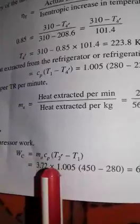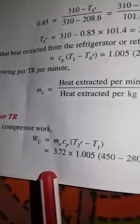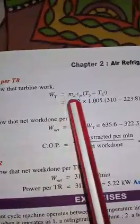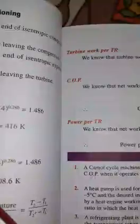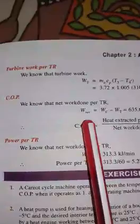Compressor work Wc = ma × Cp × (T2-dash − T1). From the PV and TS diagrams, compressor work goes from 1 to 2-dash and turbine work from 3 to 4-dash. Substituting ma = 3.73, Cp = 1.005, T2-dash = 450 K, T1 = 280 K, we get Wc = 635.6 kJ/min. Turbine work Wt = ma × Cp × (T3 − T4-dash) = 3.73 × 1.005 × (310 − 203.8) = 322.3 kJ/min.